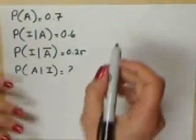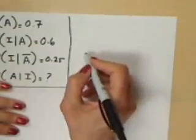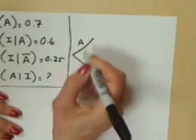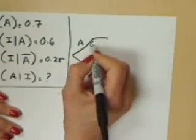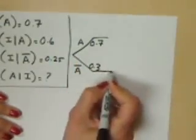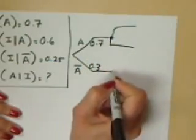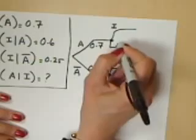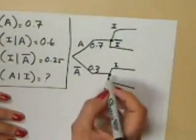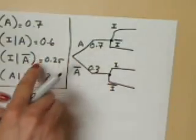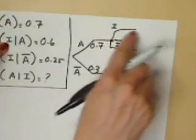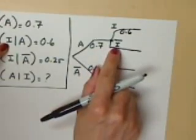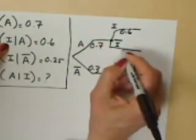To start off our problem, let's do the event for which we have a simple probability — that would be advertised and not advertised. We know advertised is 0.7, so not advertised would have to be 0.3. Then we expand into our other events: increase in sales and no increase in sales. Now we know, given advertised, the probability of increase in sales is 0.6.